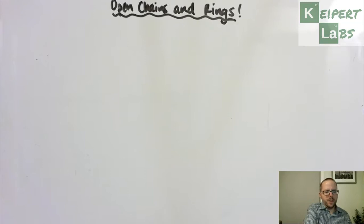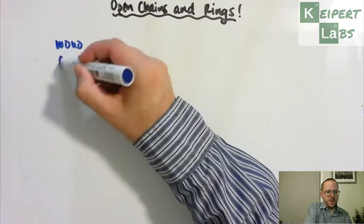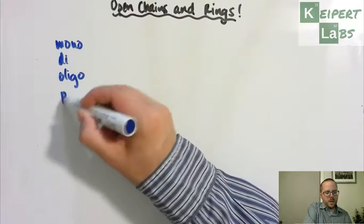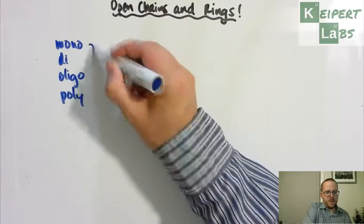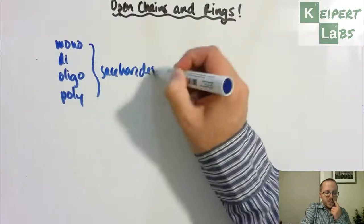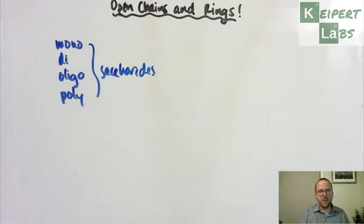So far we've looked at that in carbohydrates we have mono, di, oligo and polysaccharides, which comes from the Greek that relates to sugars - monosaccharides, disaccharides, oligo and polysaccharides.